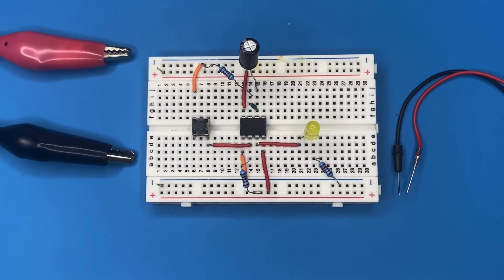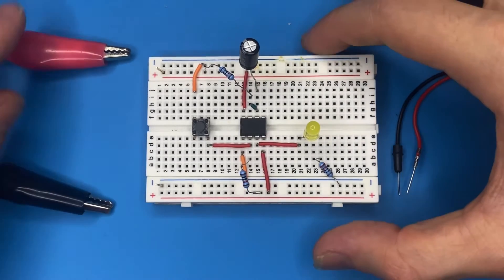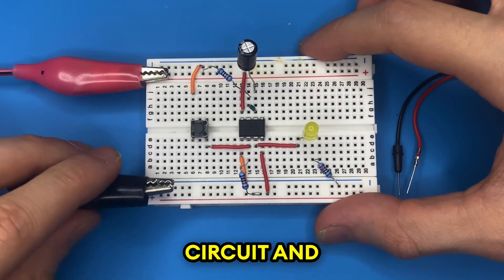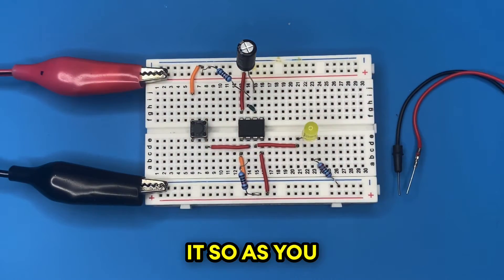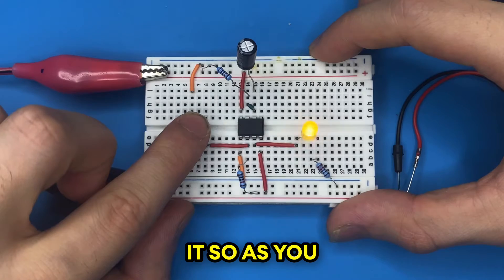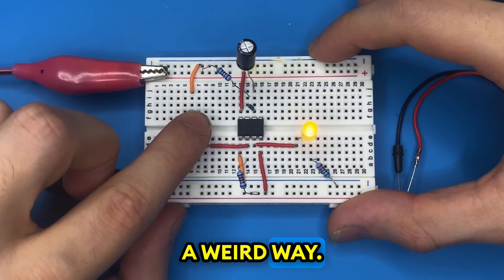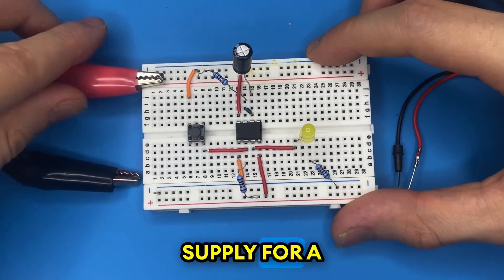Last thing we need to do is to connect the power supply to the breadboard. I have nine volts coming into the circuit. Let's test it. As you can see, the LED is blinking in a weird way. There is a reason behind this. So I will disconnect my power supply for a while.